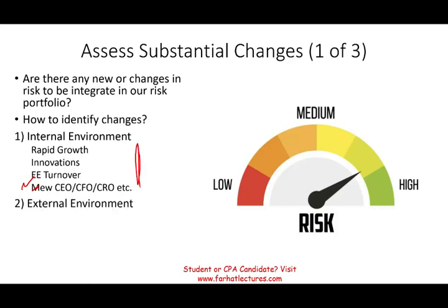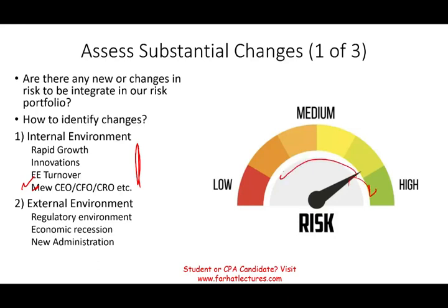These are not the only factors — there are also external factors. Usually it's the regulatory environment: changes in how the FDA approves certain products, or how the FAA, the SEC, or the government operates — what type of reports the SEC wants. That's external regulation. We might be going through an economic recession or expansion, which changes your risk profile. A new administration — for example, changes in tax policy or climate change regulation — are external environment factors that might increase or reduce your risk.